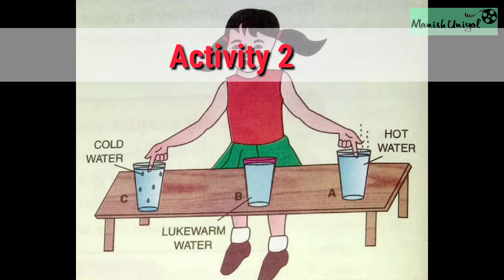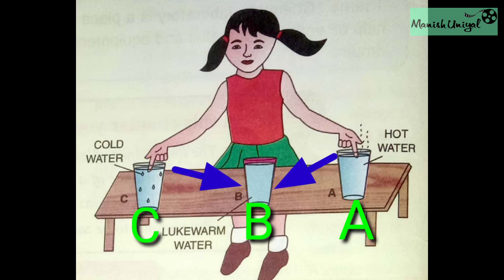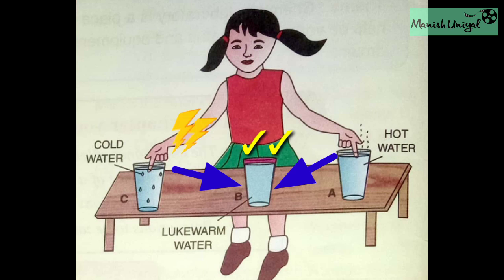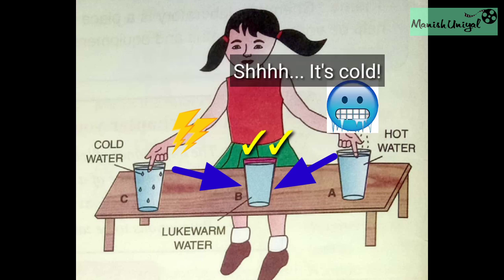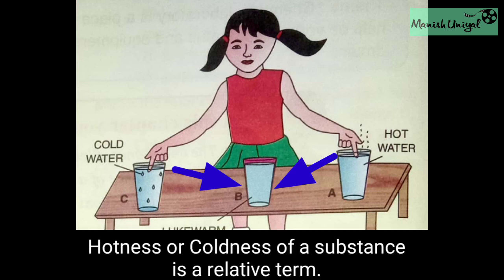Activity 2: Take three glasses A, B and C. Glass A contains hot water, glass B has lukewarm water and glass C contains cold water. Put one finger in glass A and a finger of the other hand in glass C for some time. Now put both fingers in glass B. You will feel a different sensation in your two fingers. The water in glass B feels warmer to the finger kept in cold water in glass C, whereas it feels cooler to the finger kept in hot water in glass A. This simple activity helps us draw the scientific conclusion that the hotness or coldness of a substance is a relative term.